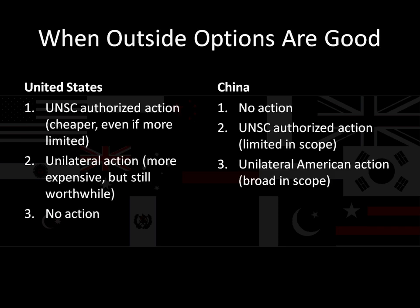Let's look at what happens when outside options are good for the United States. The US most prefers having UN Security Council authorized action — cheaper, even if a bit more limited. Because the outside options are good, the United States prefers unilateral action to no action; it's willing to pay the cost even if acting alone. On the other side, China doesn't want the United States to do anything at all. China wants no action first, then UN Security Council authorized action — because that's limited in scope — and least of all unilateral American action, which would be really broad in scope.